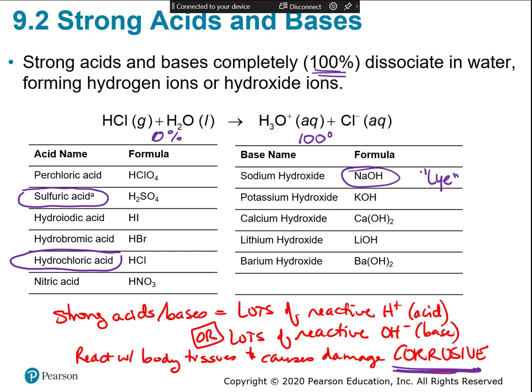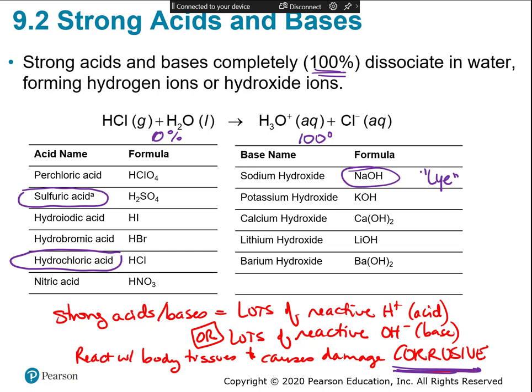If you see a formula with OH at the end, that's going to be a base. If you see a hydrogen out in front, odds are it's an acid — not always, but a pretty good chance.